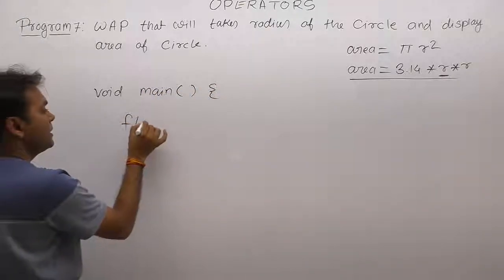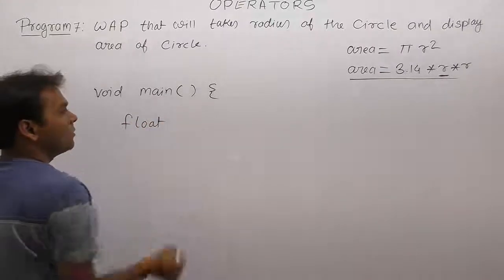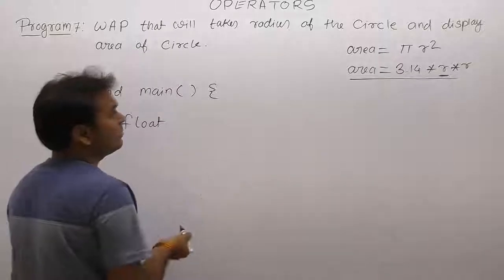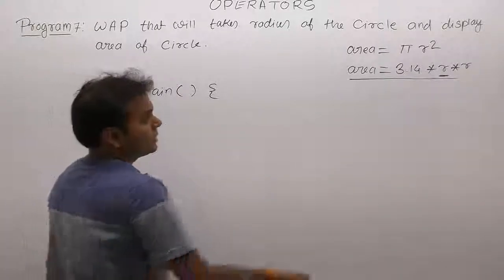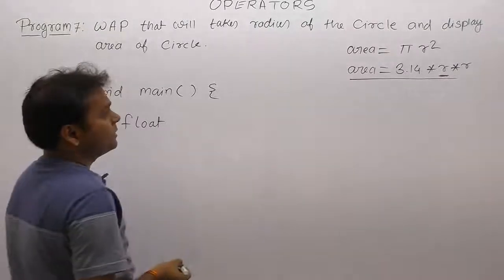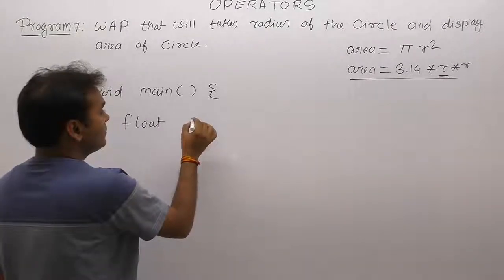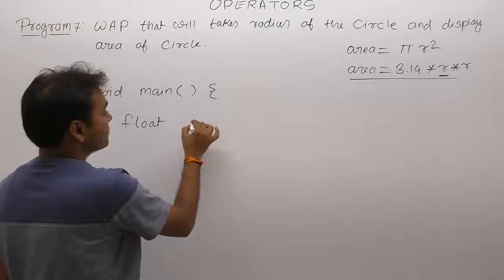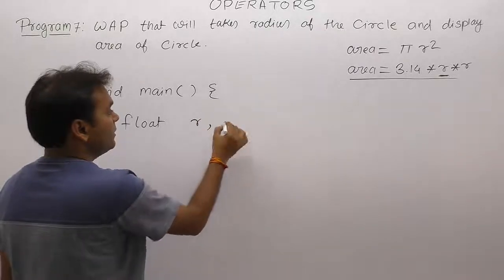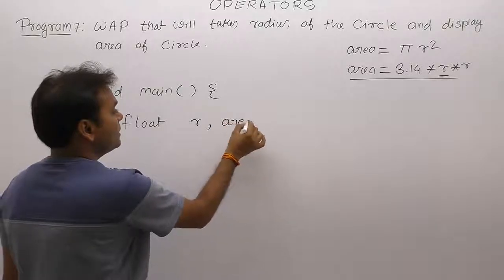Variable type taken as float because operations are in the form of decimal numbers, results are in the form of decimal because 3.14 or area may be in decimal. Therefore we are declaring some variables: r, or we can say radius, then the resultant variable is area.